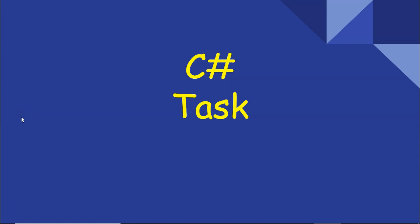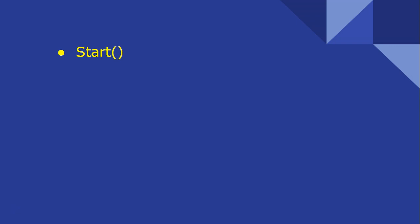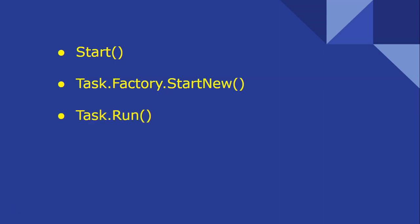Hello, good day friend. Today we will talk on C# - how to start tasks in different ways. We can start a task by creating a task and then using the Start() method, using Task.Factory.StartNew() method, or using Task.Run() method. Let us see all these in action.